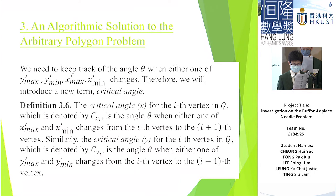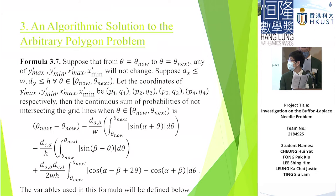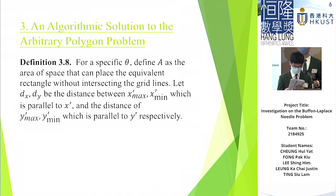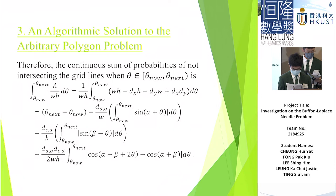And now here is Definition 3.6. The critical angle x for the i-th vertex in Q, which is denoted by c_{x_i}, is the angle when either one of x' extrema changes from the i-th vertex to the (i+1)-th vertex. And this can apply to c_{y_i}. So, using Lemma 3.3, we can obtain that c_{x_i} equals theta_i and c_{y_i} equals theta_i plus π/2. And here is Formula 3.7. When theta is in this range and x', y' extrema do not change, then the continuous sum of probabilities of not intersecting the grid lines is shown below. Therefore, the continuous sum of probabilities of not intersecting the grid lines is this.